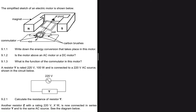Write down the energy conversion that takes place in this motor. We already told that it is a motor, but even if we were not told, we would be able to tell because of the presence of a power source. The energy conversion that takes place in a motor is that electrical energy is converted to mechanical energy. For generators it is the other way around — mechanical energy is converted to electrical energy.